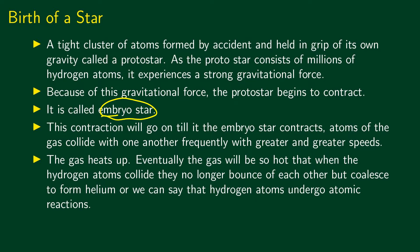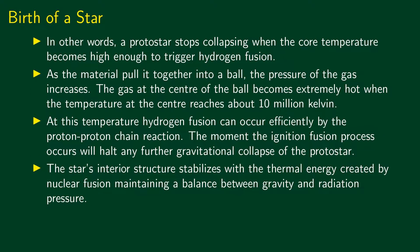The atoms are going to collide at speed, and the collisions cause the gas to get heated up. Eventually the gas will be so hot that when the hydrogen atoms collide, they no longer bounce off each other. The hydrogen atoms form helium atoms through nuclear fusion reactions. A protostar stops collapsing when the core temperature becomes high enough to trigger hydrogen fusion.